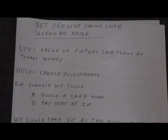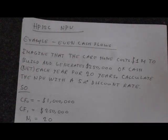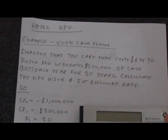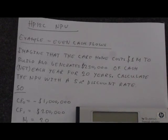Now let's look at the examples. We'll start with even cash flows because they're slightly easier. So we'll take the care home example again. Imagine that we've got a care home that costs $1 million to build and generates $250,000 of cash net each year for 20 years. It's a very simplified example. A care home that never increases its cash flow. It's always $250,000 for 20 years. We're going to calculate the net present value with a 5% discount rate.